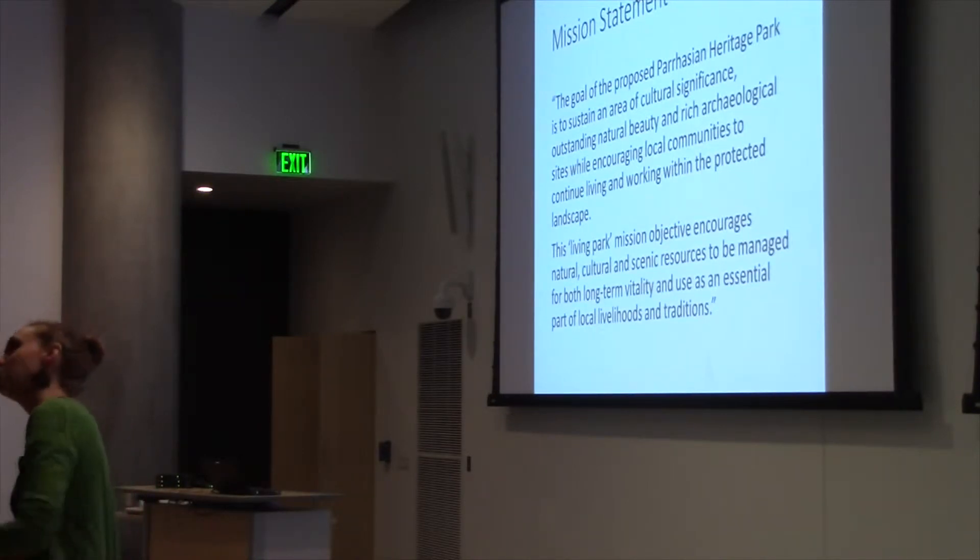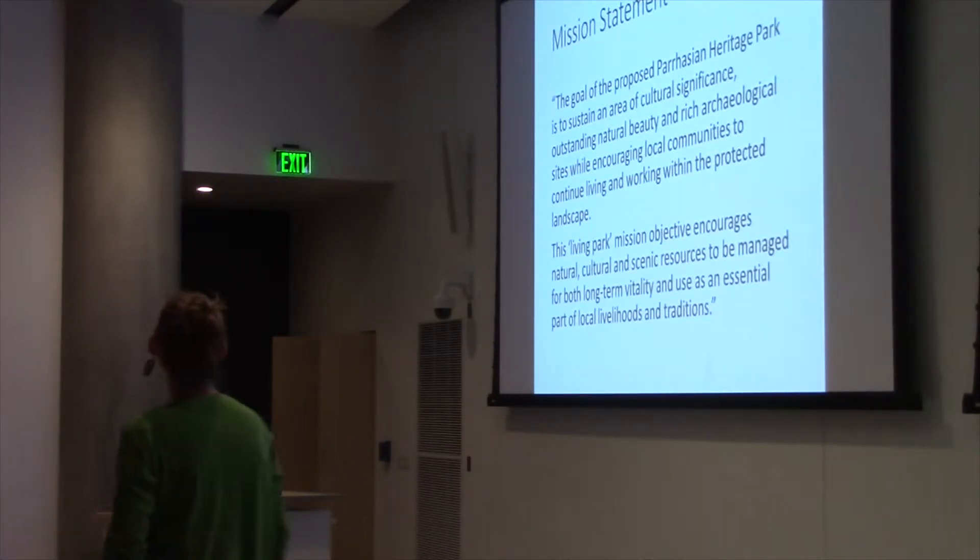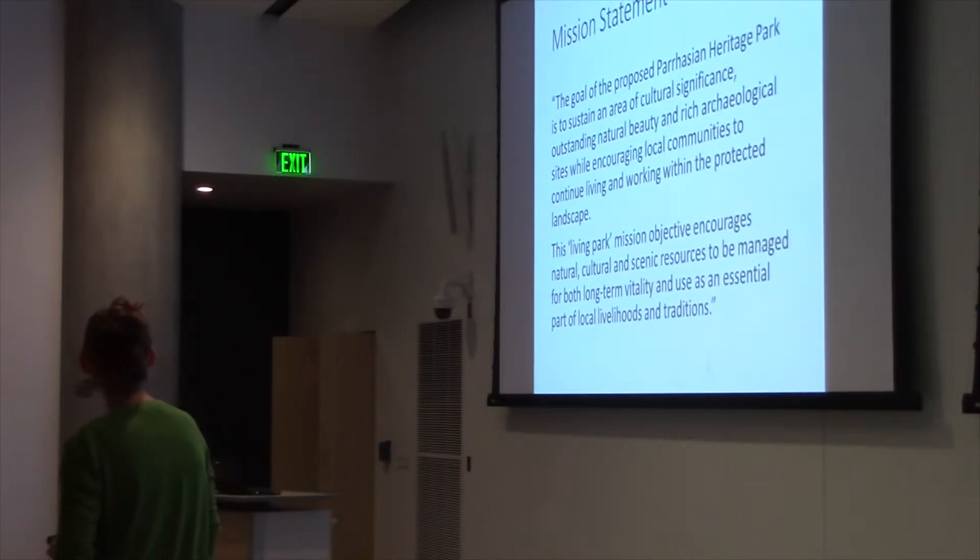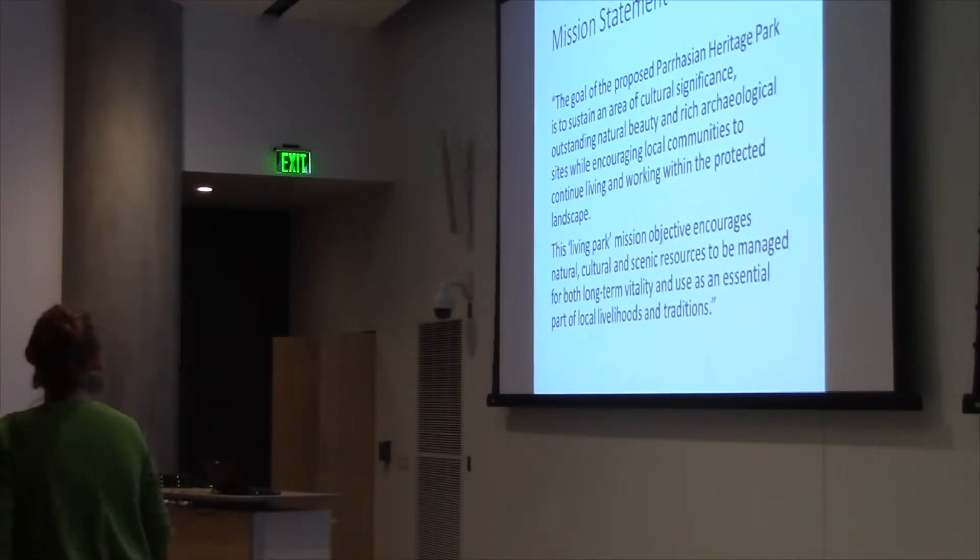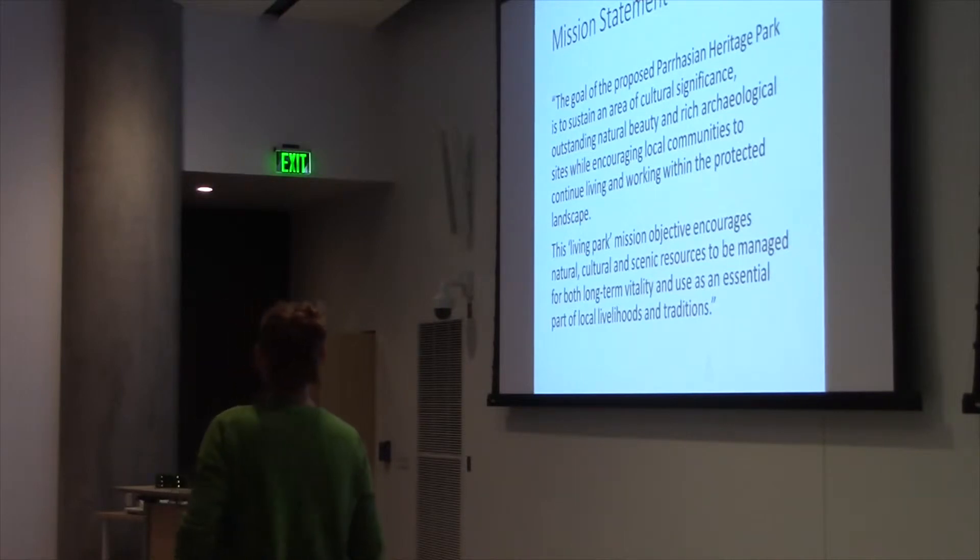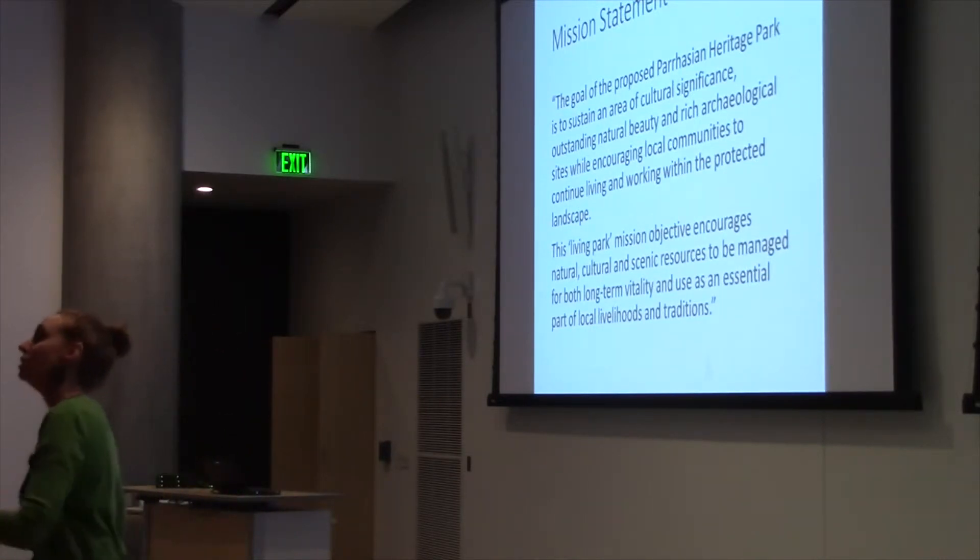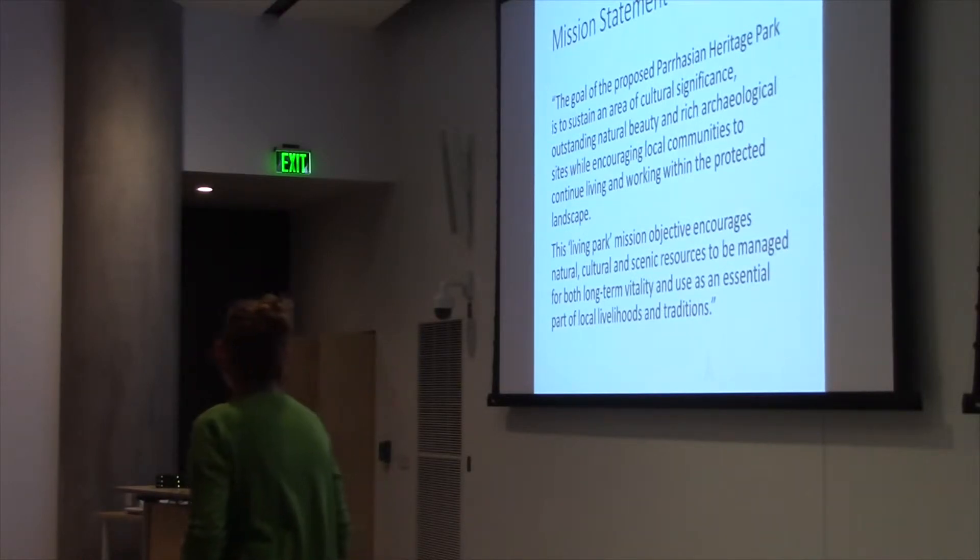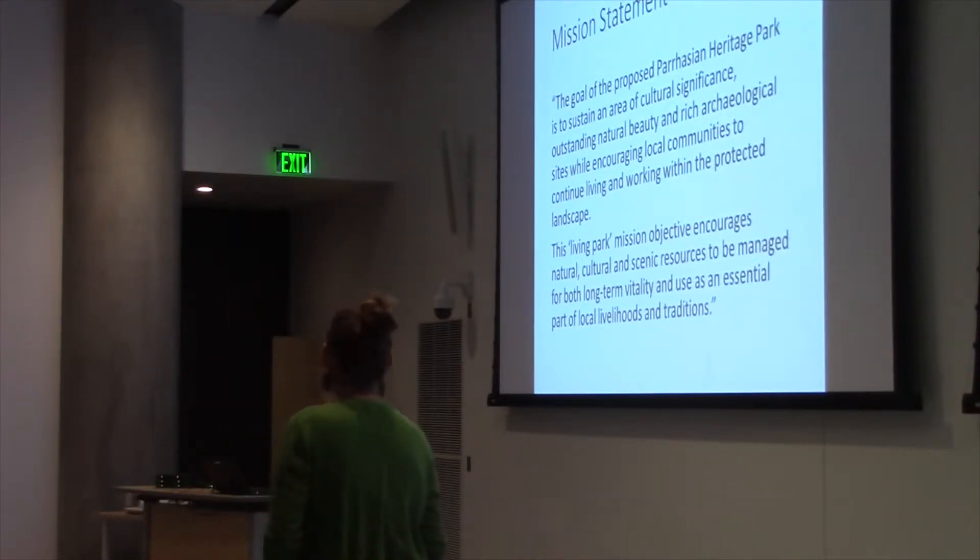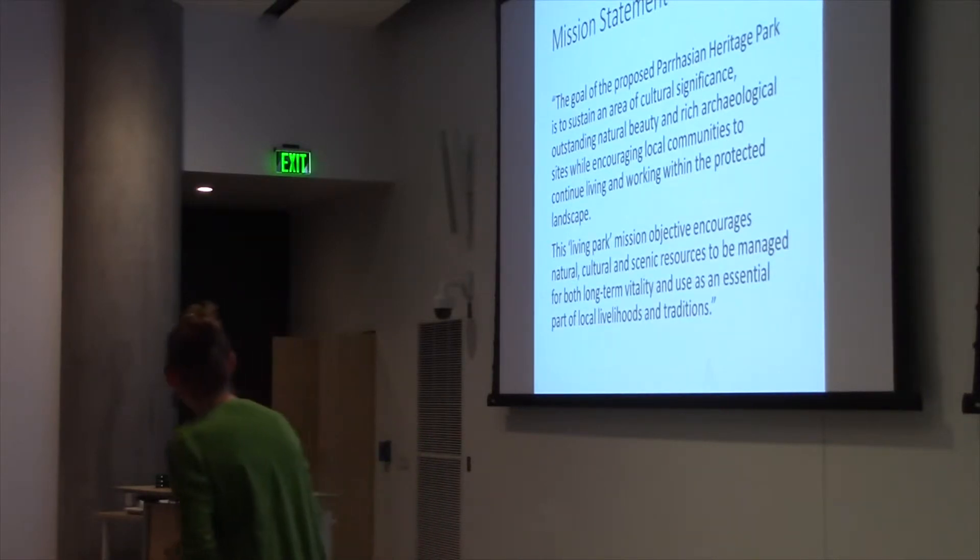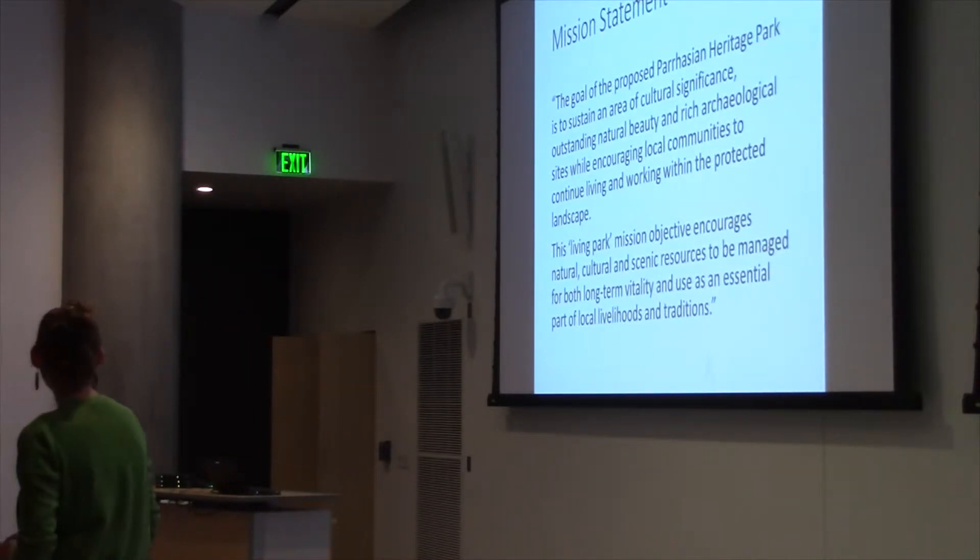To get back to the idea of a heritage park, what exactly is a heritage park and how is it different than a regular park? The goal of the proposed Parasian Heritage Park is to sustain an area of cultural significance, outstanding natural beauty, and rich archaeological sites while encouraging local communities to continue living and working within the protected landscape. This is how a heritage park is a little different than your average park. People still live in it. They still use the landscape. They still interact with the landscape and we don't want to stop that. Which gets to the second part of the mission statement. This living park mission objective encourages natural, cultural, and scenic resources to be managed for both long-term vitality and use as an essential part of local livelihoods and traditions. This is really where my project came from. I wanted to see if I could find a way to encourage the livelihoods and traditions in the area while providing an economic opportunity for the people who live within it.